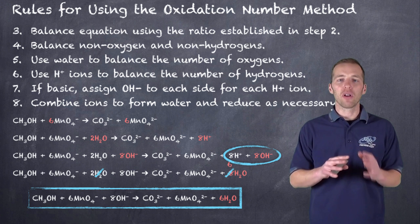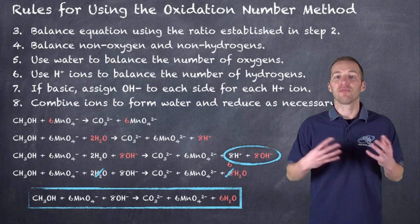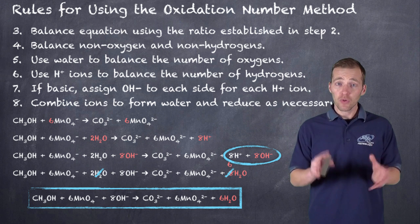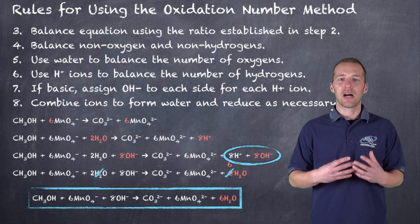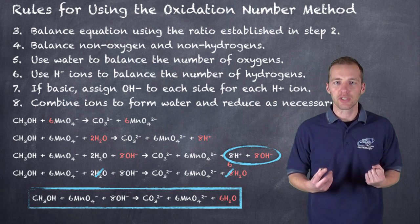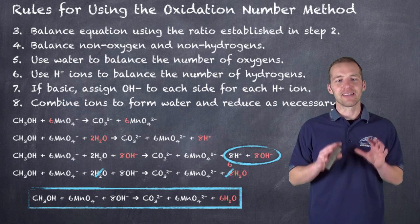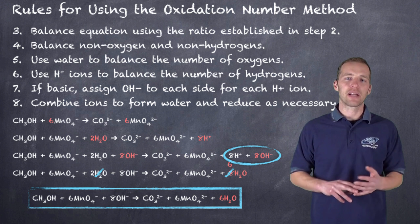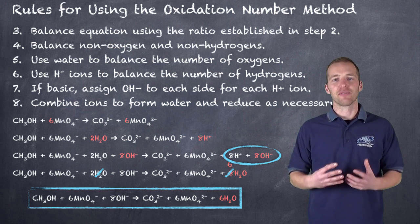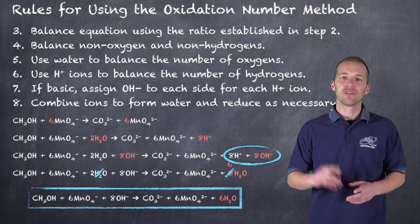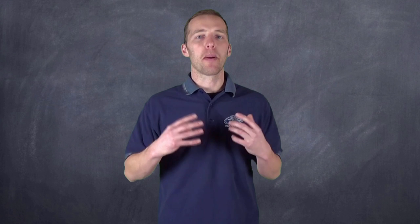We don't need to worry about combining equations or electrons — all we do is reduce and we have our balanced redox reaction under basic conditions. To check: count all atoms on the left and right — they should be equal. More importantly, since this involves electron transfer, the net charge on the reactant side must equal the net charge on the product side. You will find that is absolutely the case. You do not put electrons in at the end of the oxidation number method — and likewise, no electrons should appear in a final balanced equation from the half-reaction method either.